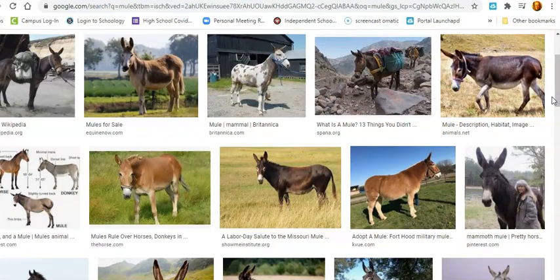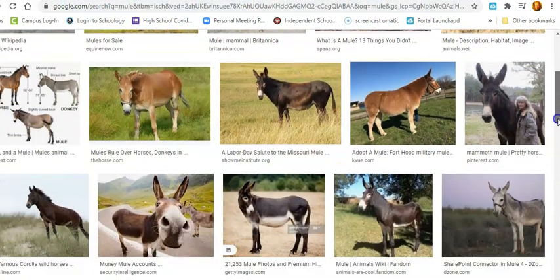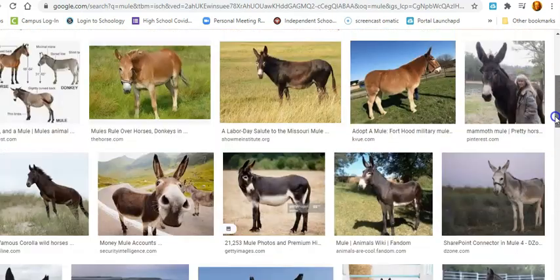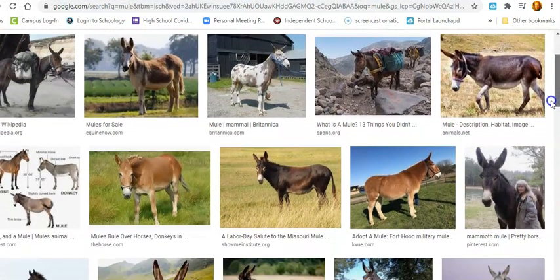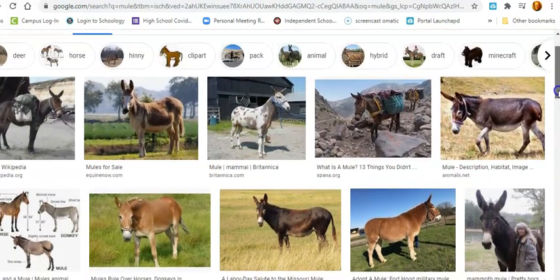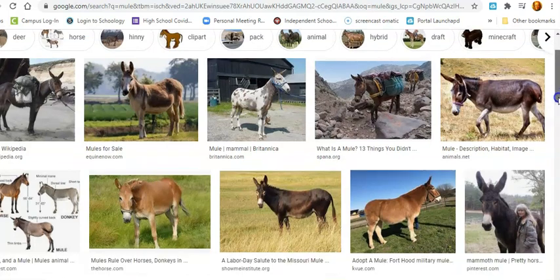Another example would be a mule. So a mule is a donkey and a horse that have bred together. And mules can be really useful for some farm applications. They're really strong. They're not as big as a horse, so they don't need as much food and care. But mules can't have children. So if you have a mule, that's it. If you want another mule, you need another horse and donkey to kind of go together.